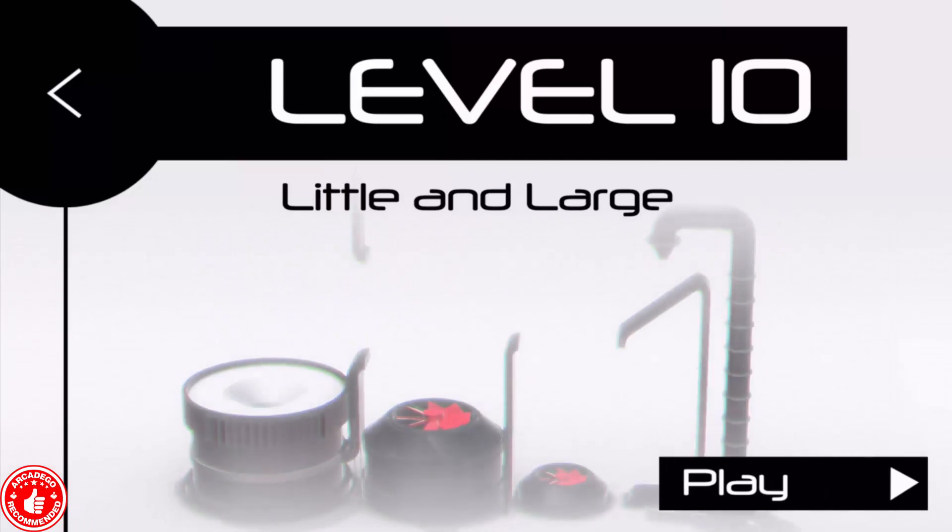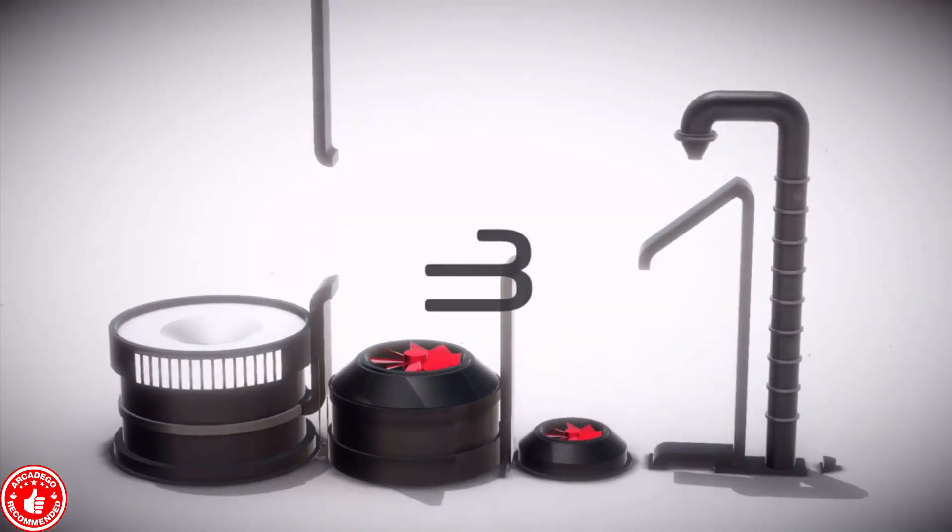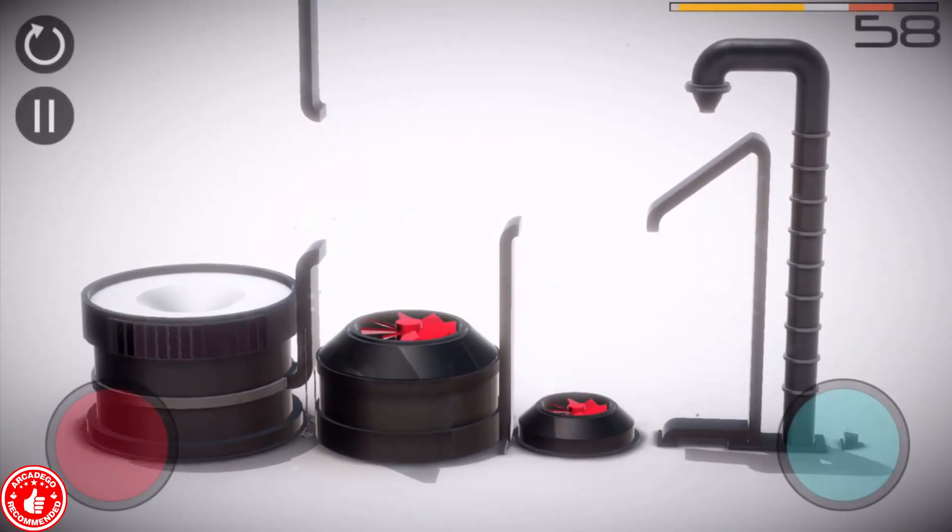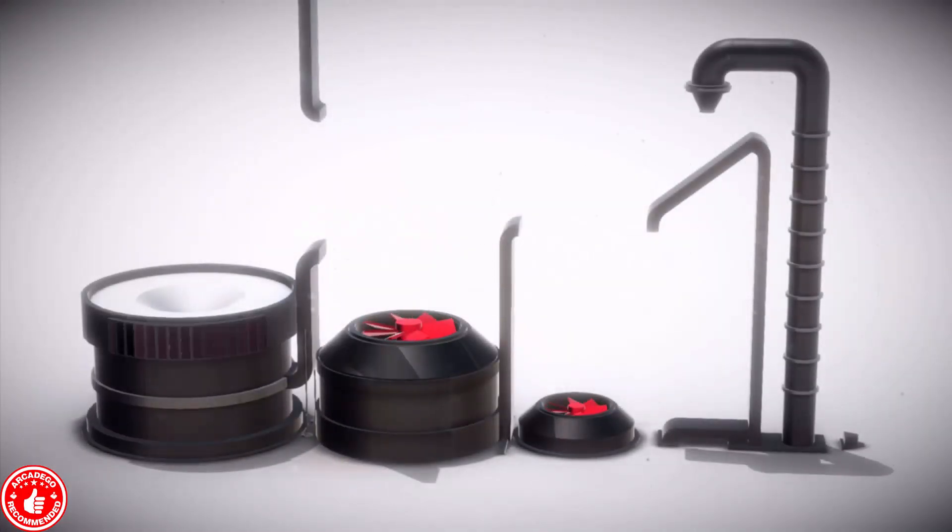So I'm wondering what's in the next area. Because this area is actually cooler than the previous one. This is level 10, little and large. Little fan and large fan, I'm guessing. Which one is the small fan? Is the blue one the small one? Wait a second. I can't spin this blue one. I'm thinking we have to restart. The blue one's not... It's spinning right now. But it wasn't spinning before. That was so weird.